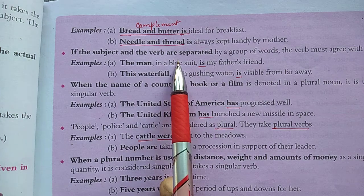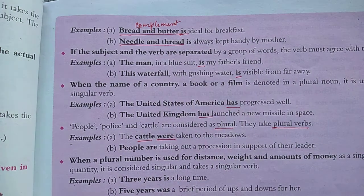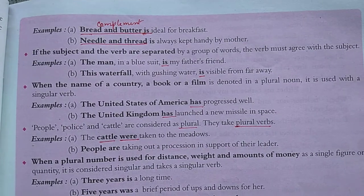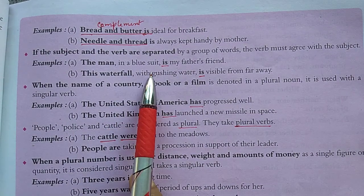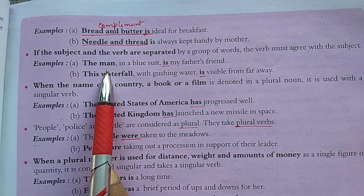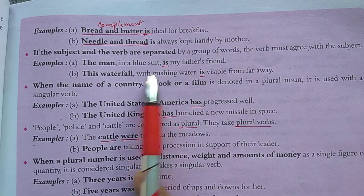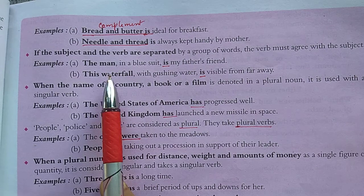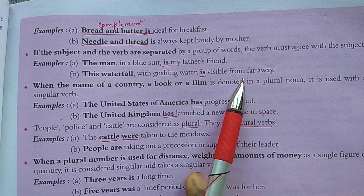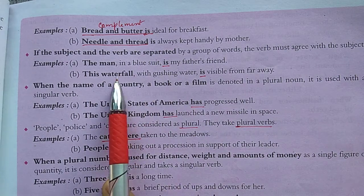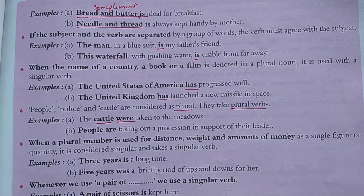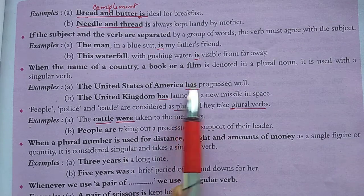If the subject and verb are separated by a group of words, the verb must agree with the subject, not the intervening phrase. For example, 'The man in a blue suit is my father's friend' — the subject is 'the man,' so we use 'is.' Similarly, 'This waterfall with gushing water is visible from far away' — the subject is 'waterfall,' so the verb agrees with it.